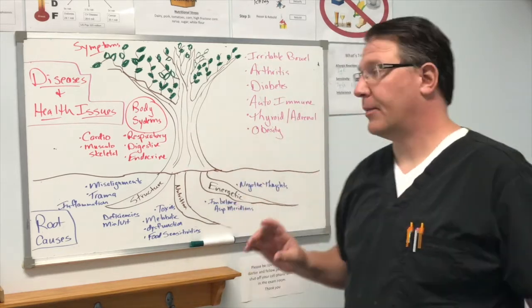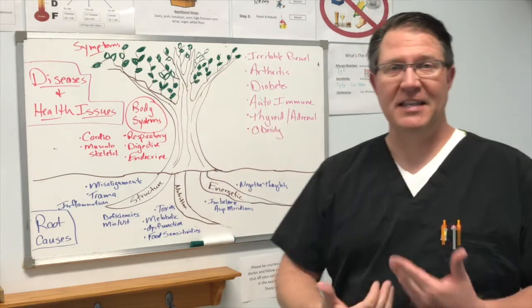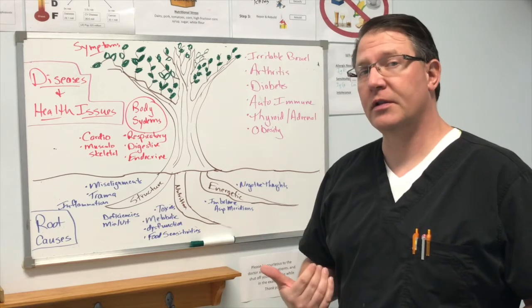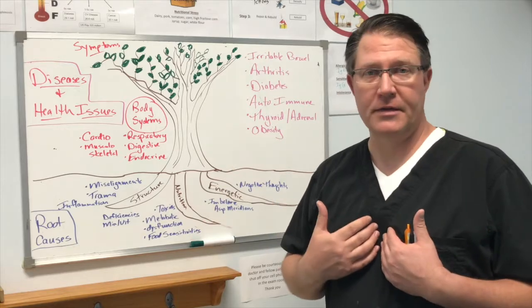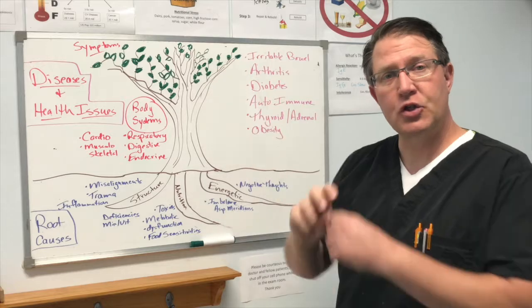Let's take for example that the branches of a tree represent body systems. Maybe our respiratory system, our digestive, or even our endocrine system, musculoskeletal system, or even our cardio or heart system. And from there, branches and leaves sprout and shoot out.